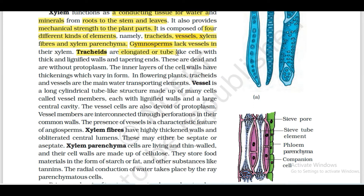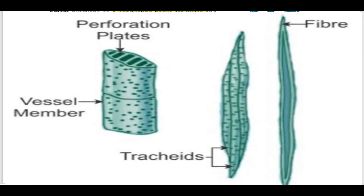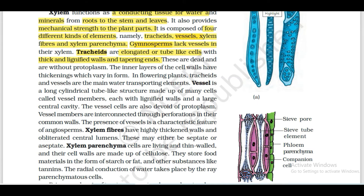Tracheids are elongated tube-like cells with thick lignified walls and tapering ends. The cell wall is thick and lignified - lignified means it is composed of lignin, which is a compound. At maturity, tracheids are dead cells.